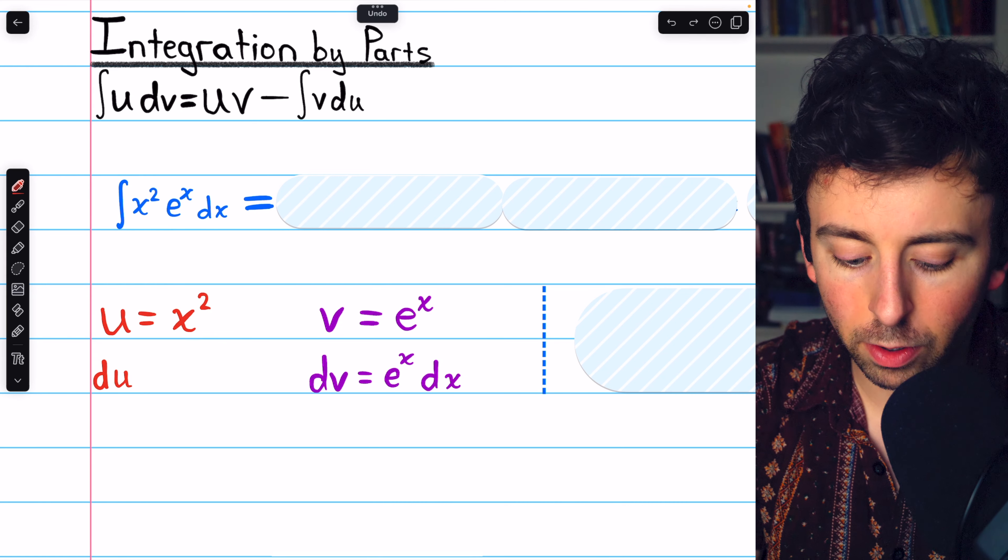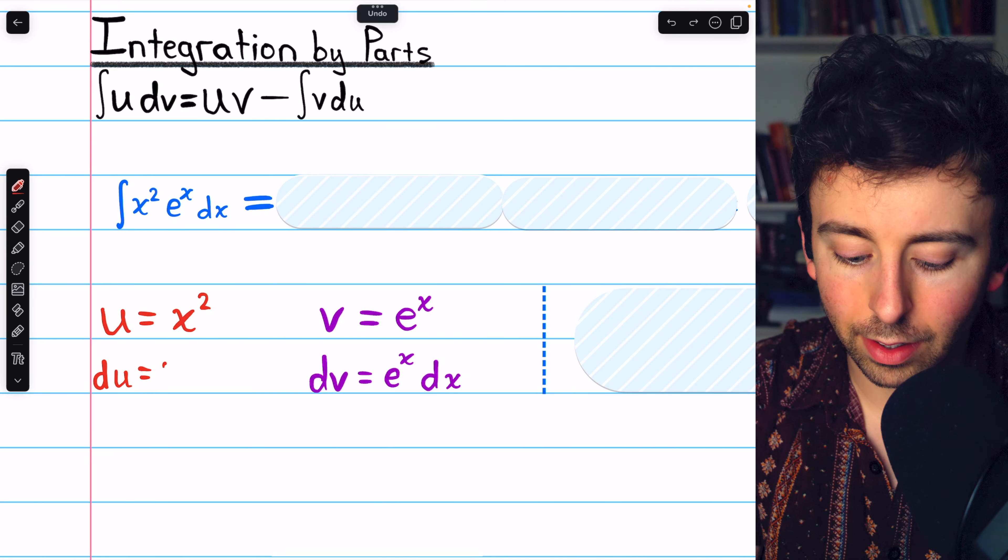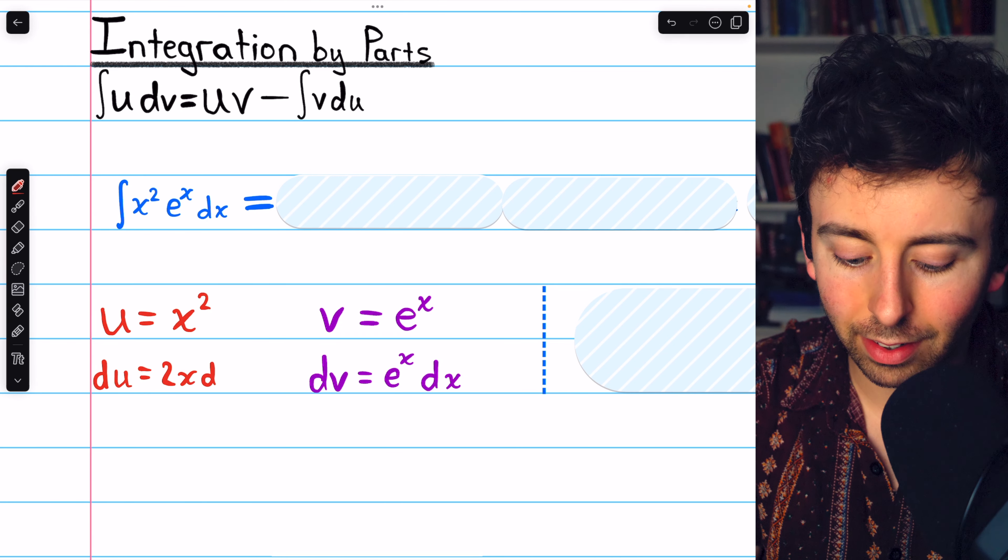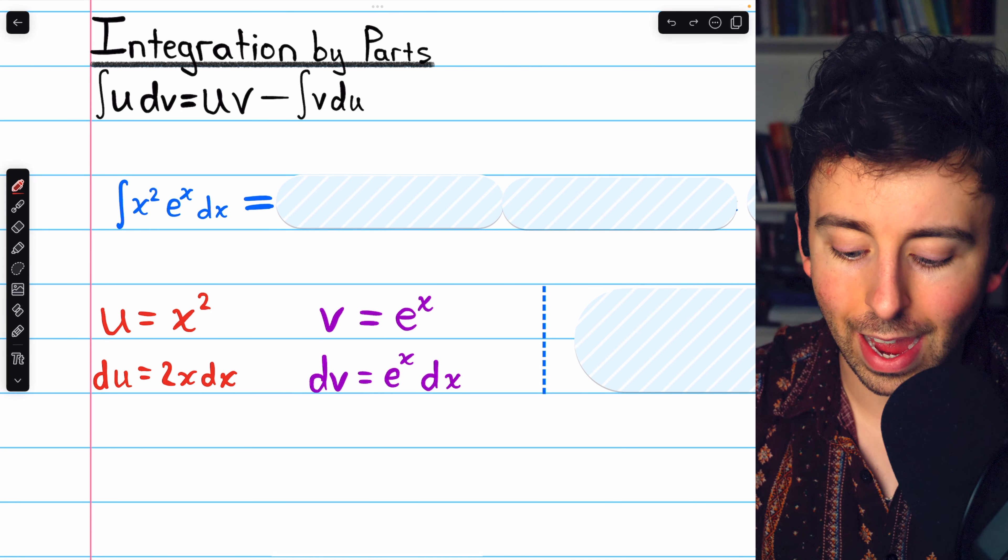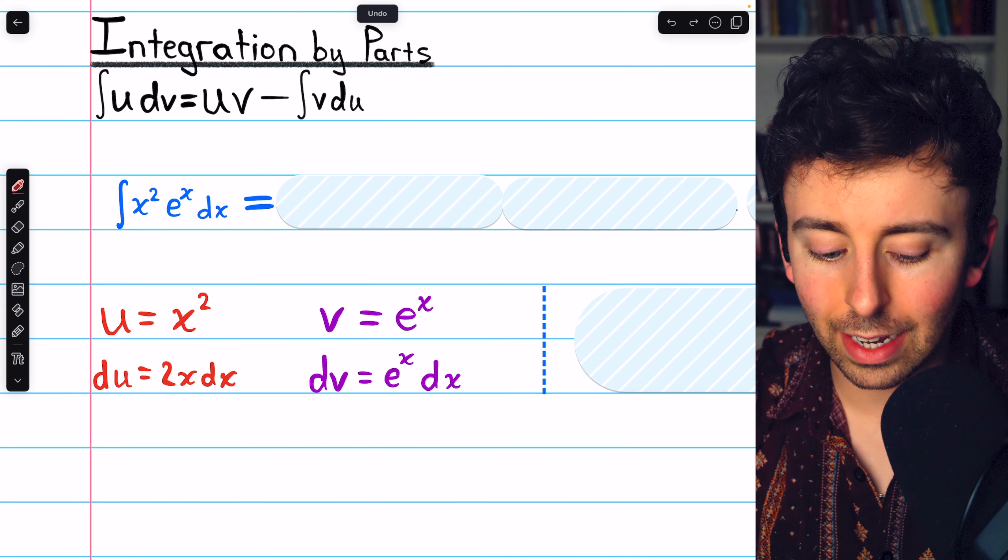So letting u equal x squared, we have that du is 2x dx. And then letting dv equal e to the x dx, we can integrate that to get v equals e to the x.